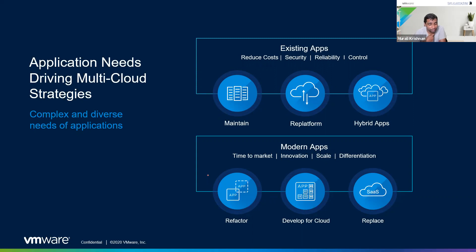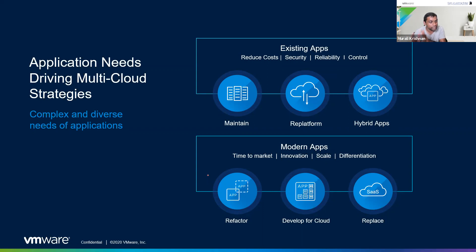Some companies still run super outdated versions — Windows NT, Windows 2000, Windows 95, Windows 98. Some enterprise still runs these applications for one reason: it works. They don't want to change just because of technology enthusiasm. As long as it works, nobody touches it in the enterprise.